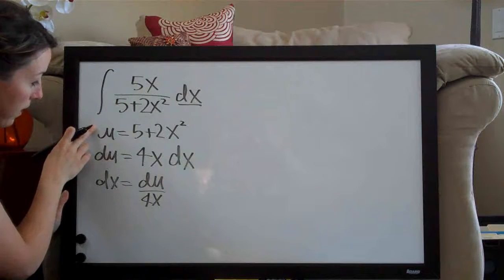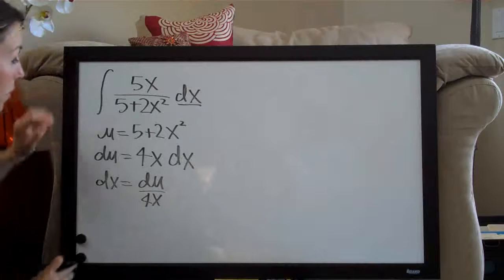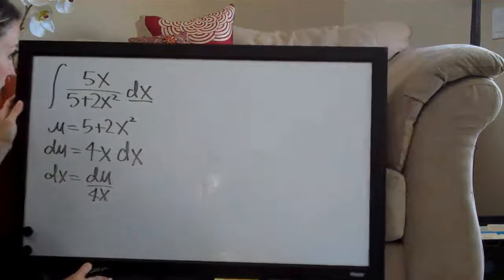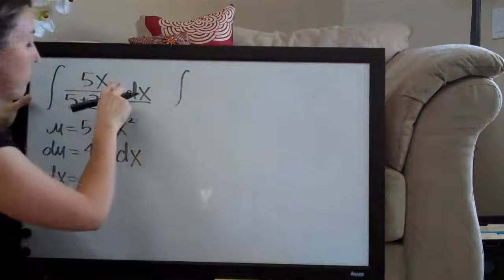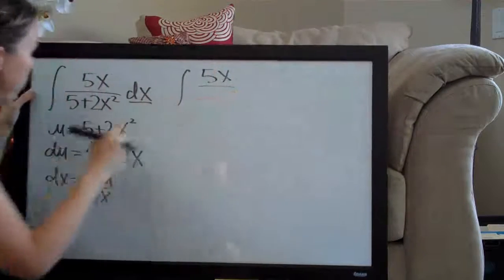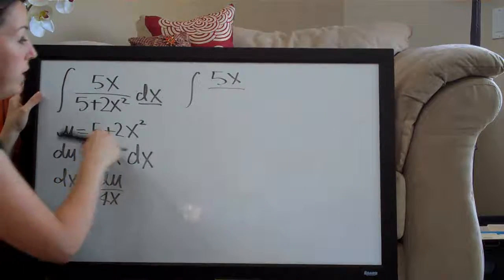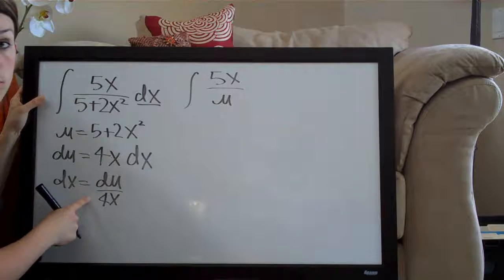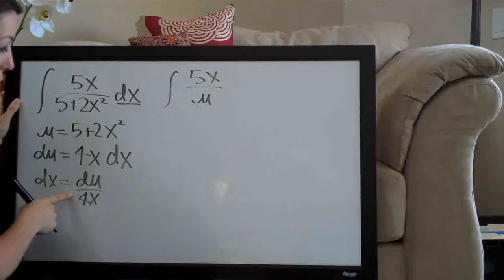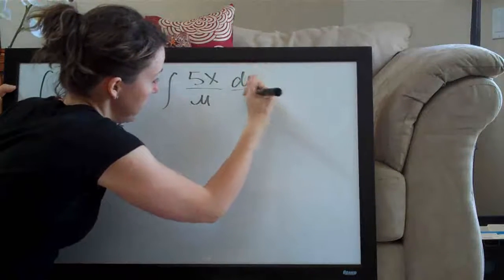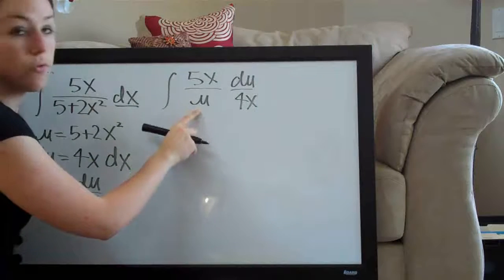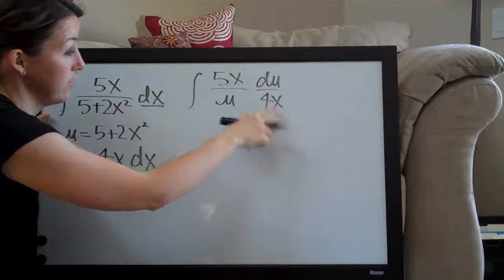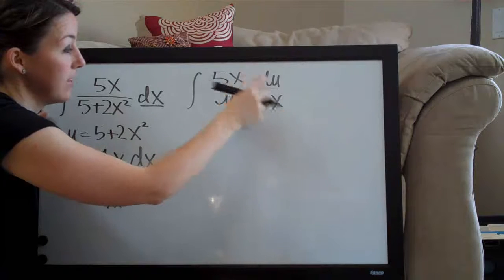Now that we have our u and we solved for dx, we can go ahead and plug these two things back into our equation here. What that's going to look like when we plug back in is the integral of 5x on the top stays the same, we didn't touch that. But then, we assign u to 5 plus 2x squared, so we're going to have u on the bottom here and then dx, we solved for dx and we got du over 4x. So, we've got 5x over u times du over 4x, which is great because now we're in a situation where we can cancel out these x's. We have an x in the numerator and an x in the denominator, so we can cancel those out.